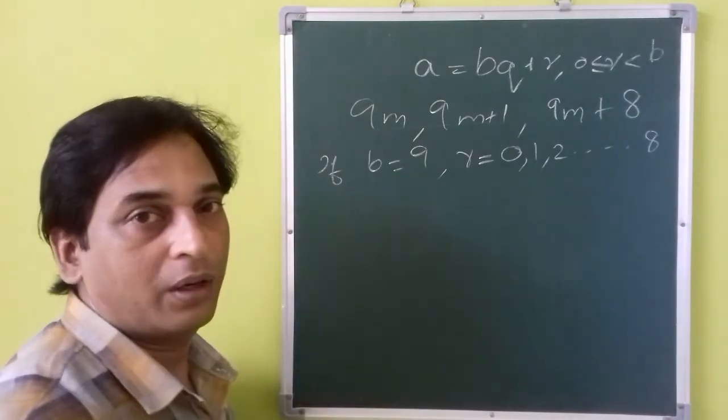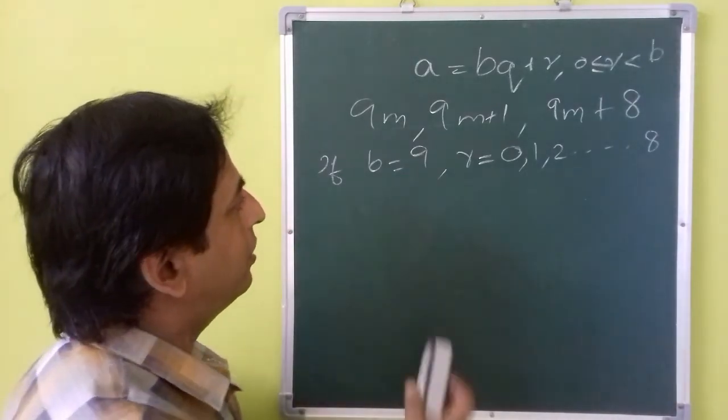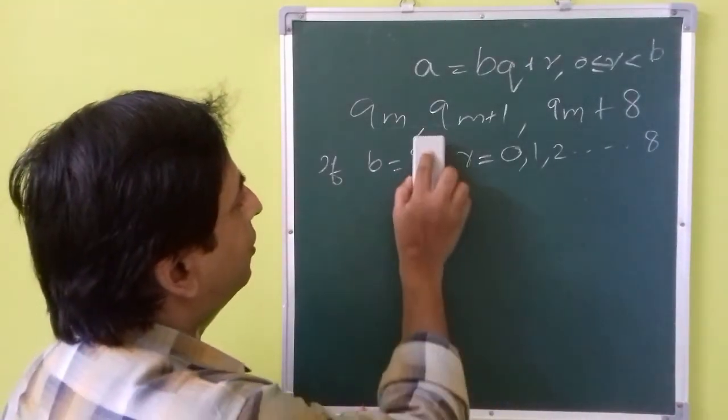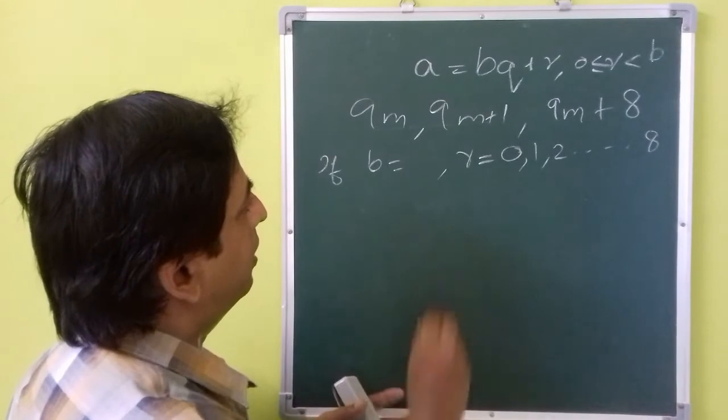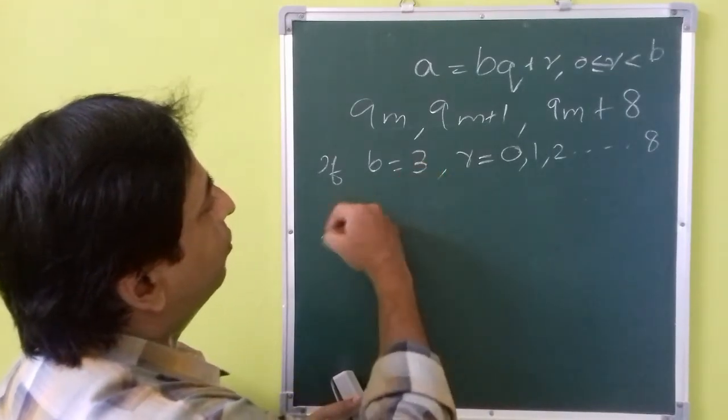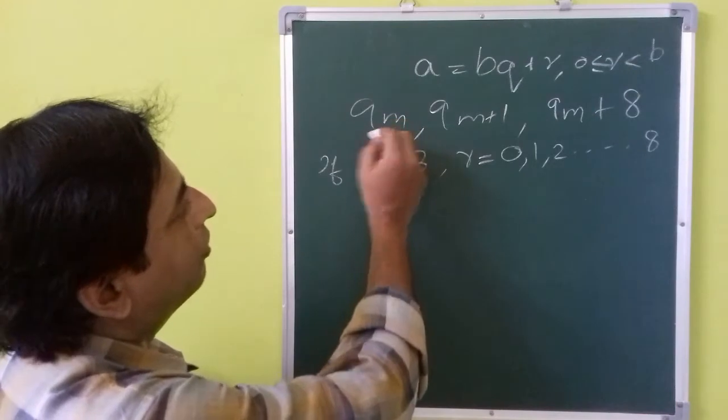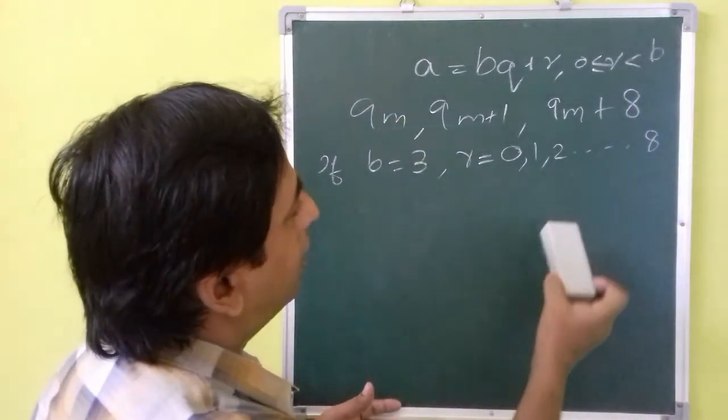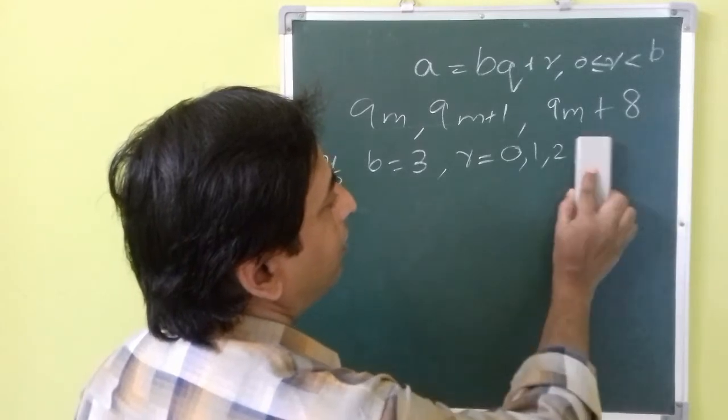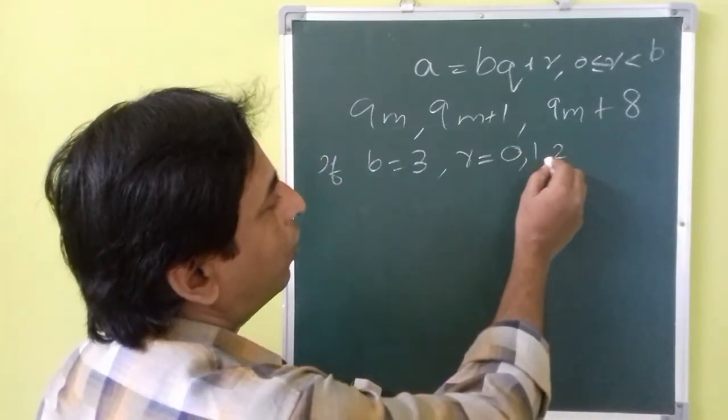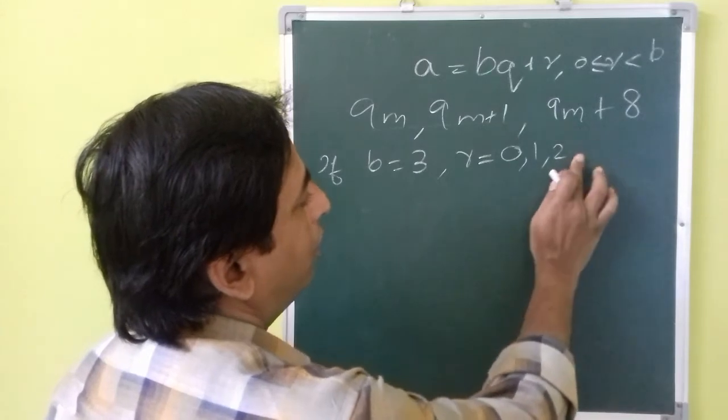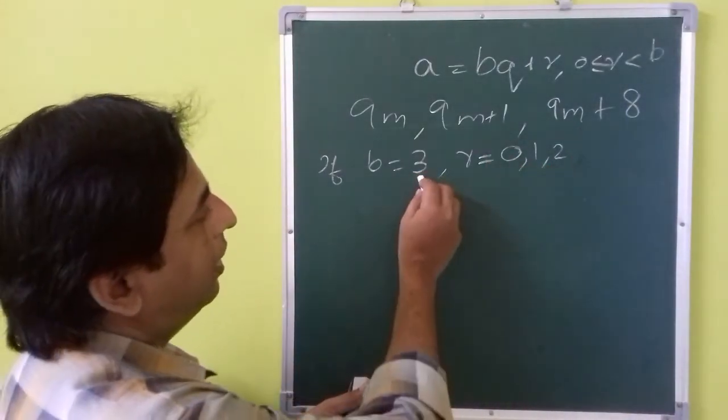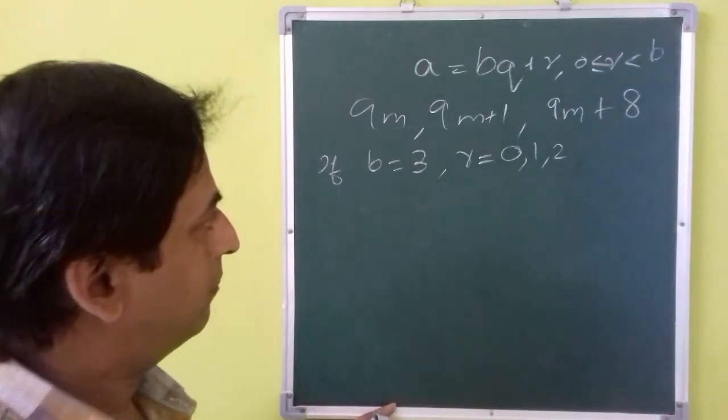This will be a longer process. So for making it easier we can take b is equal to 3. As you are cubing it you will get a multiple of 9, then our work will be a little less because the remainder will be 0, 1, and 2 only, since the remainder cannot be greater than the divisor.